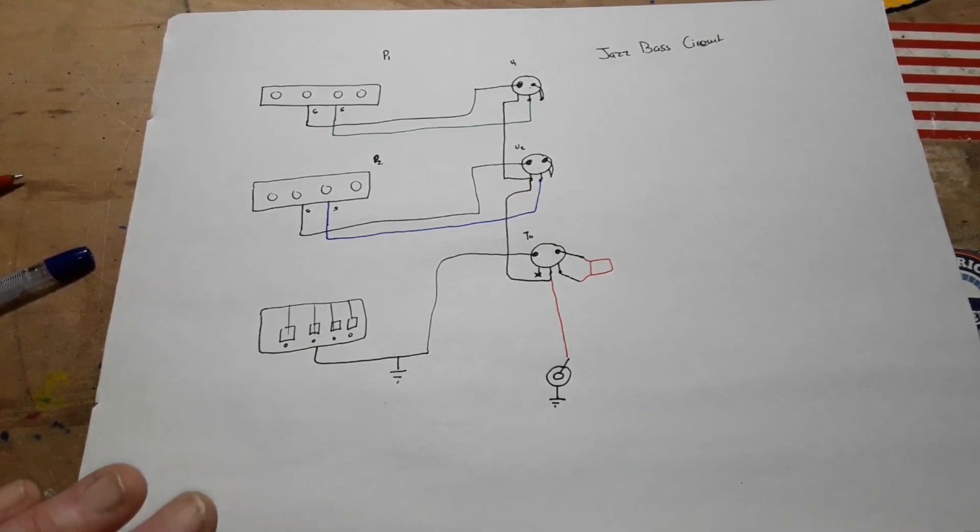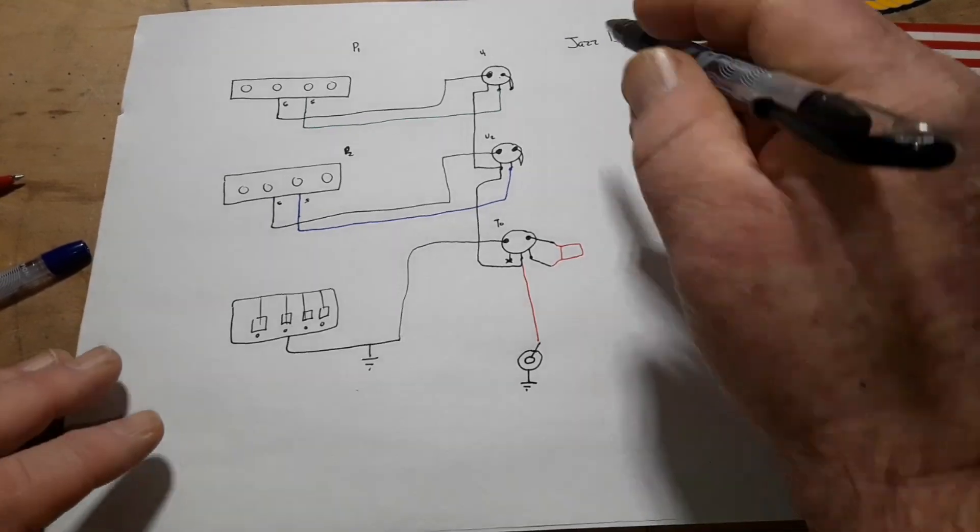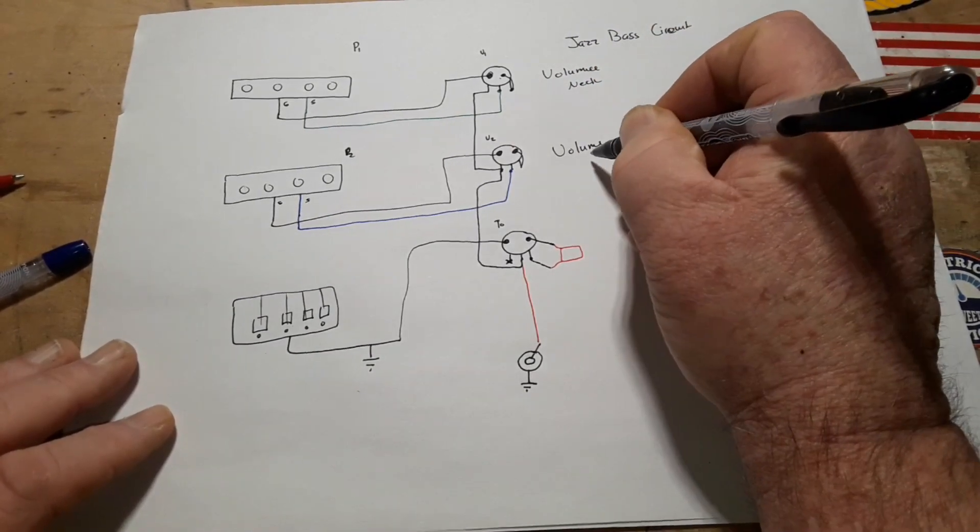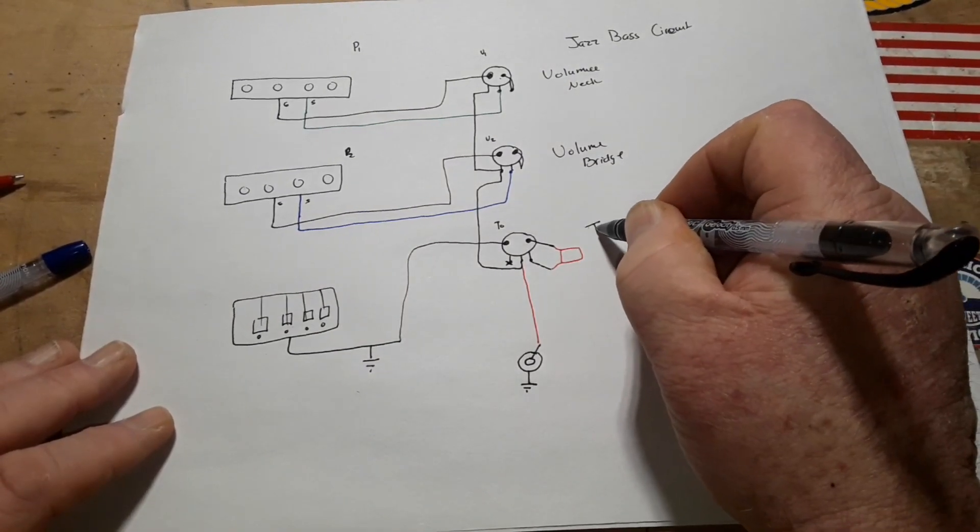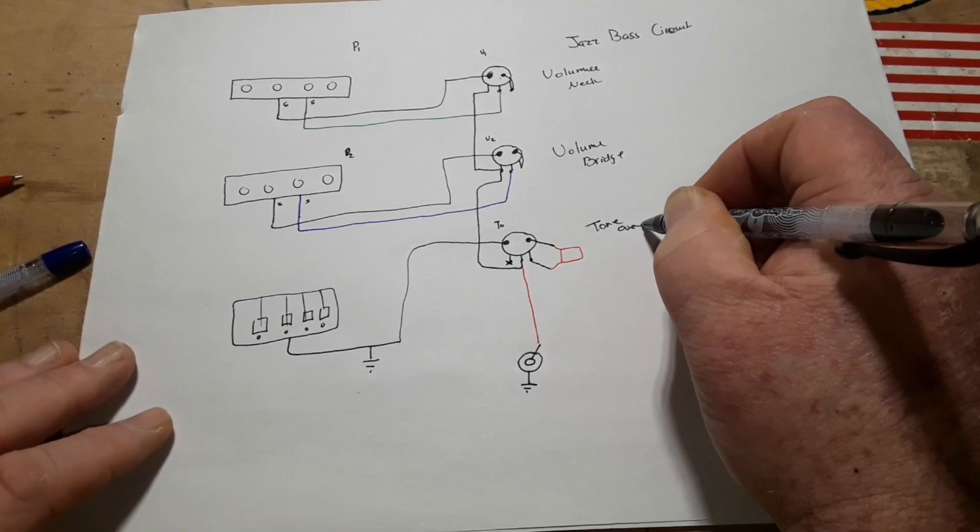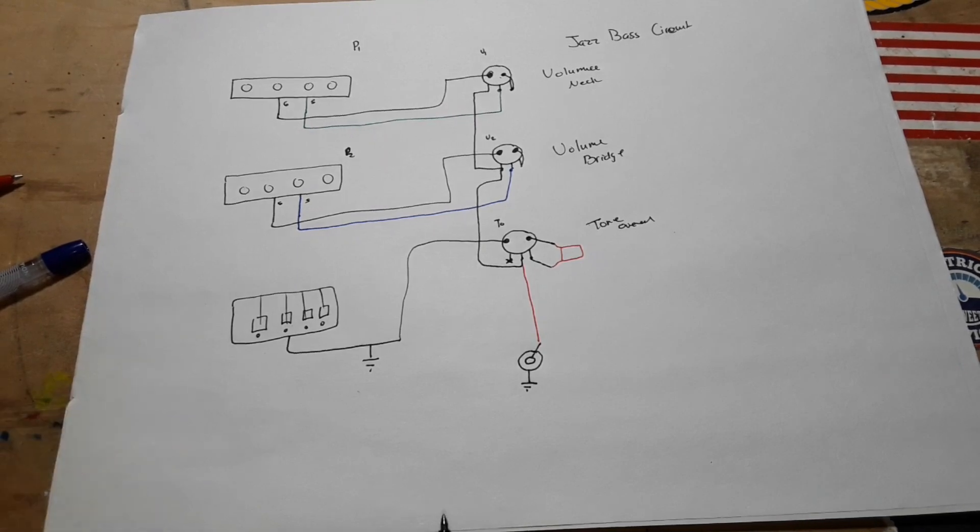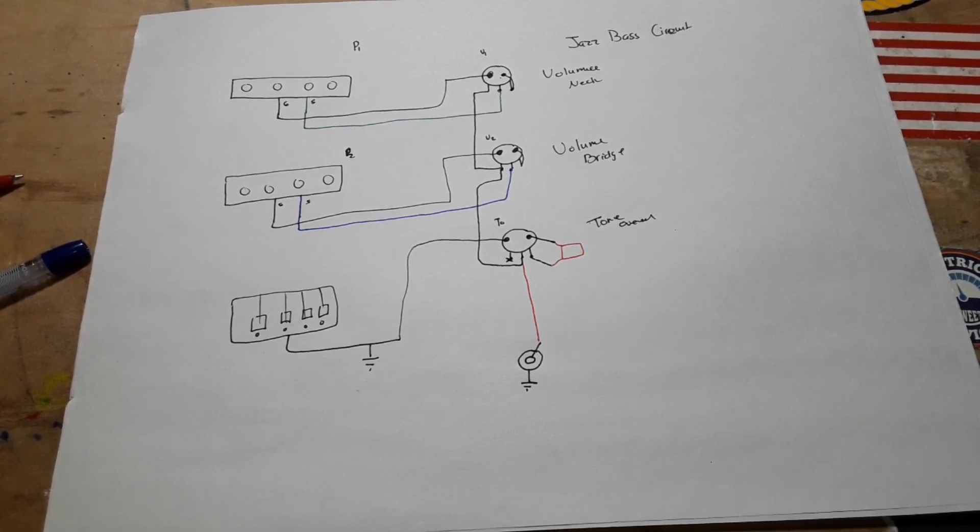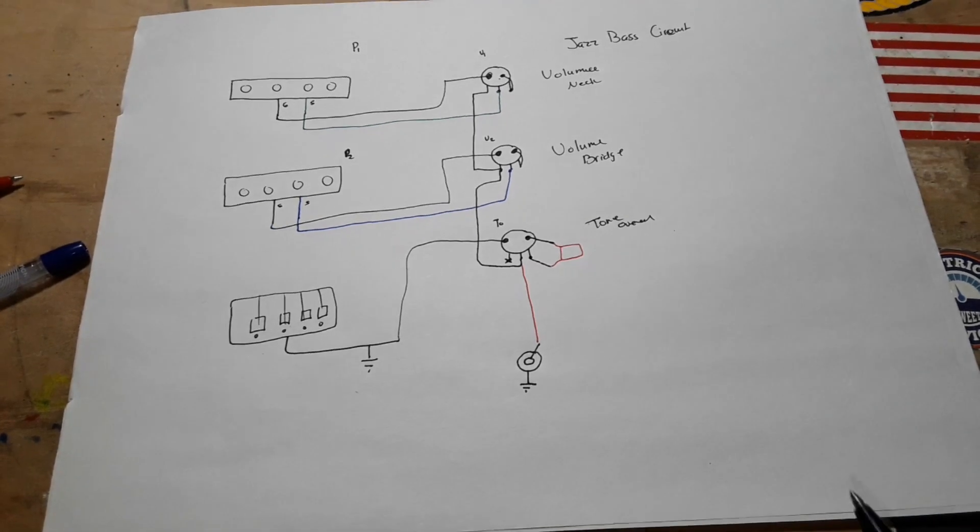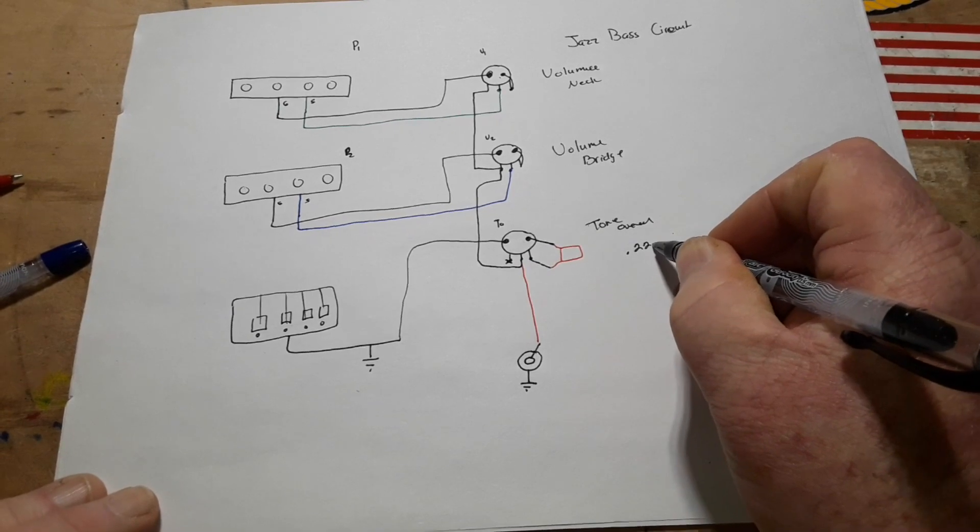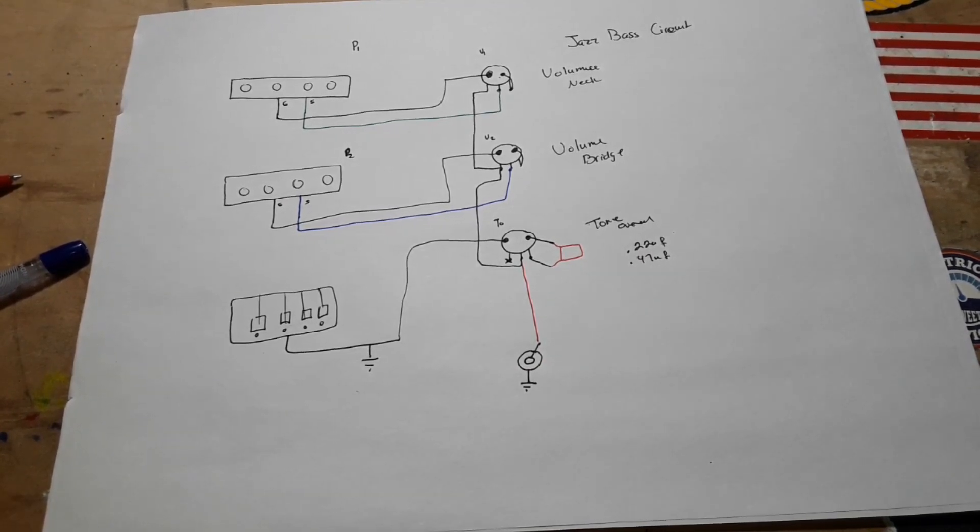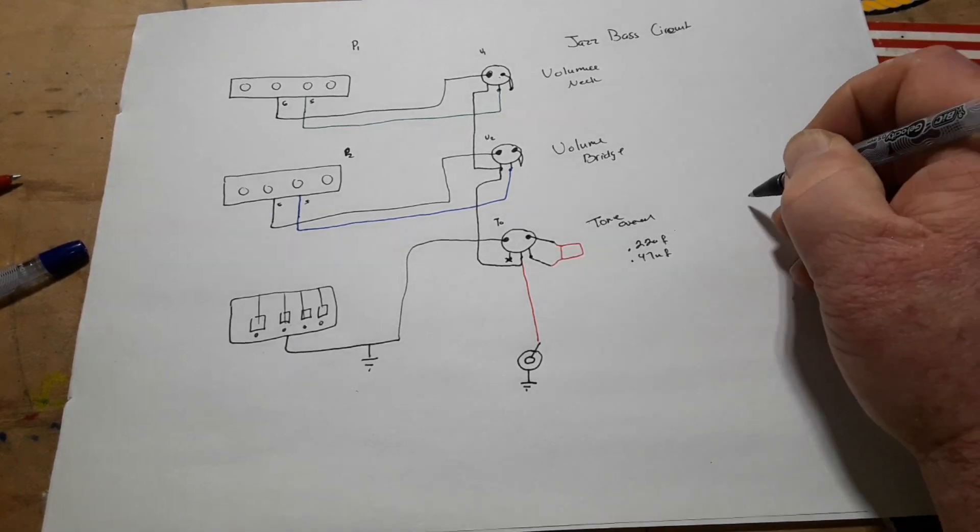Now with your tone knob it becomes a little bit more interesting. Let me label these values: volume neck, volume bridge, and tone, we'll call it overall. So what value of capacitor do you put in there? That becomes an important question. Well, let's talk about what that capacitor does and we'll be able to better answer that question. But just to start things out kind of simply, the most common you're going to find are 0.022 microfarad and 0.047 microfarad. And you may be asking yourself why?